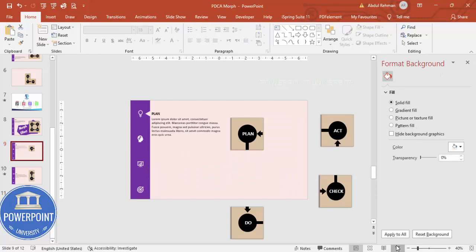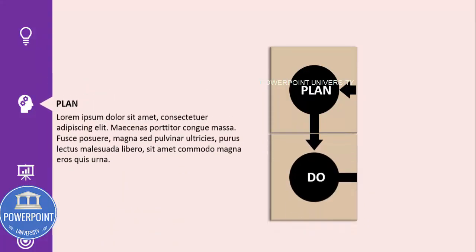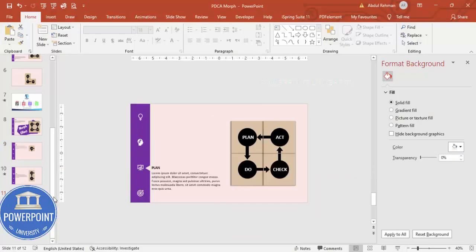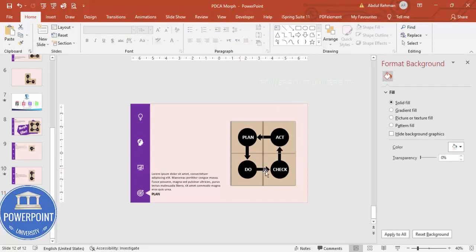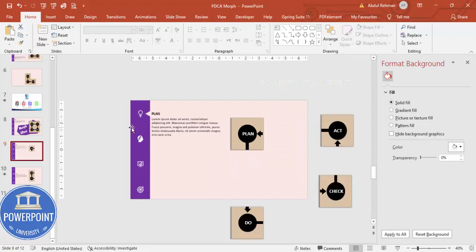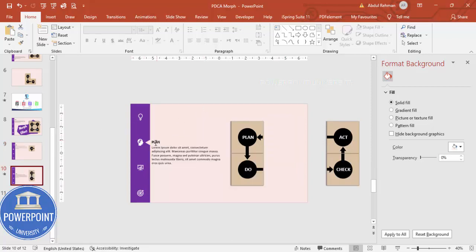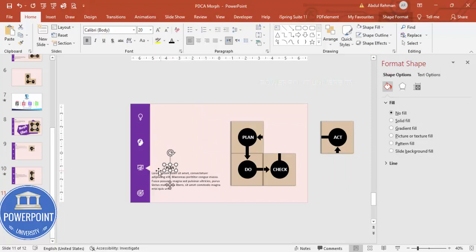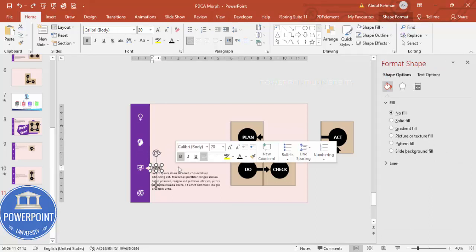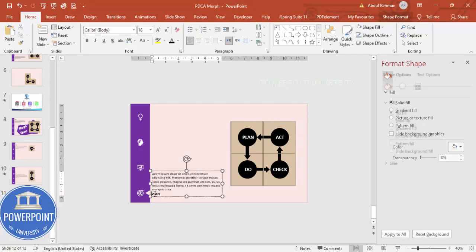Play the presentation to see Plan, Do, Check, and Act in sequence. On the final slide, move the remaining shapes off-screen so all four are displayed. Update each title label: Plan, Do, Check, and Act. Zoom in to make the edits easier.